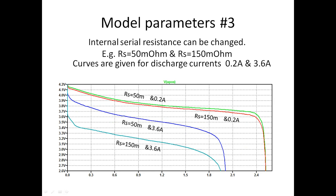The next parameter is internal serial resistance, or internal impedance. We can adjust it — setting more or less internal serial impedance. Importantly, serial resistance has impact mainly at relatively high current or high load. When the load current is quite small, resistance has limited impact; with significant load current, resistance has quite significant impact.